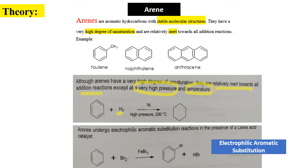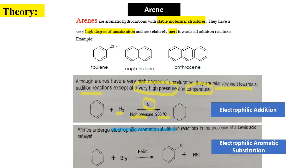Addition to arenes can occur but only with the help of a nickel catalyst at high pressure and 200°C, forming cyclohexane. Arenes also undergo electrophilic aromatic substitution — for example, benzene (C6H6) where a hydrogen is replaced by bromine. This is a substitution reaction for aromatic compounds. For this reaction, a Lewis acid catalyst must be present.